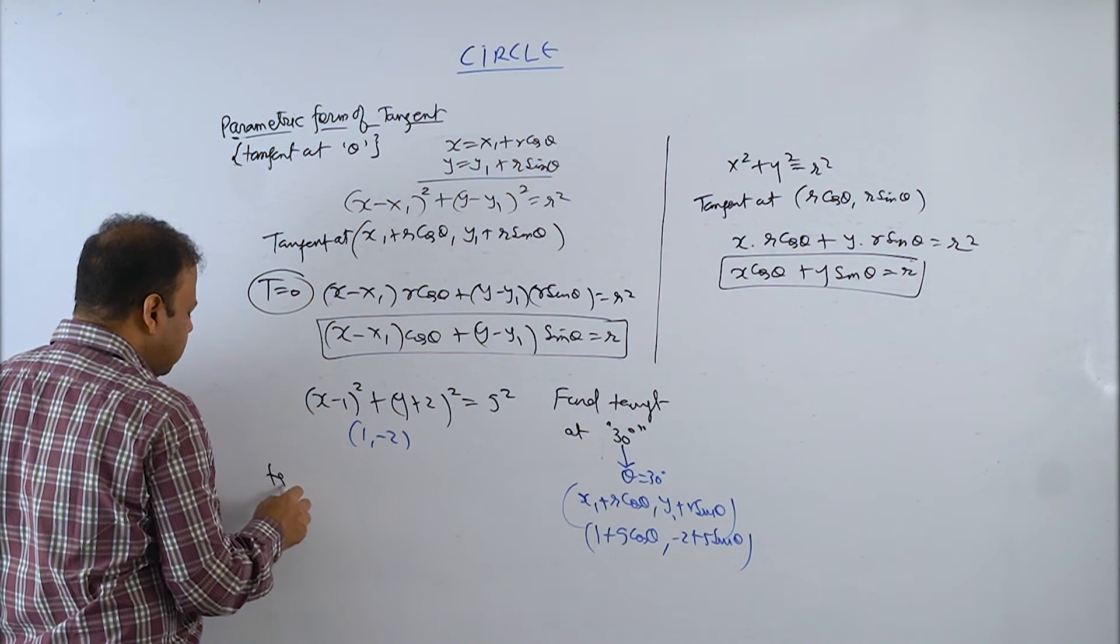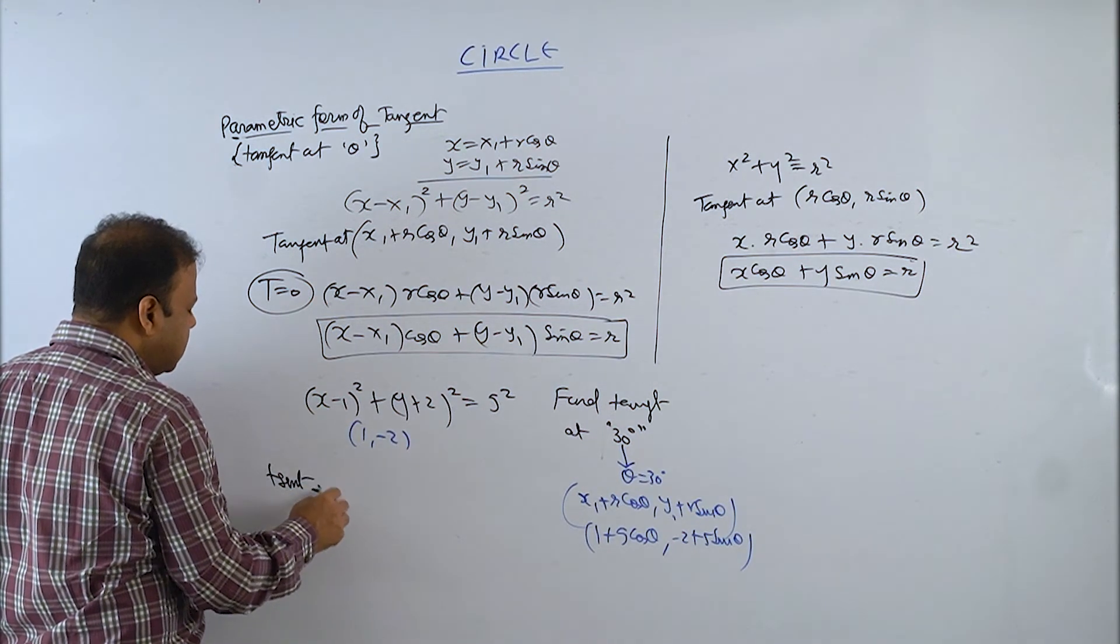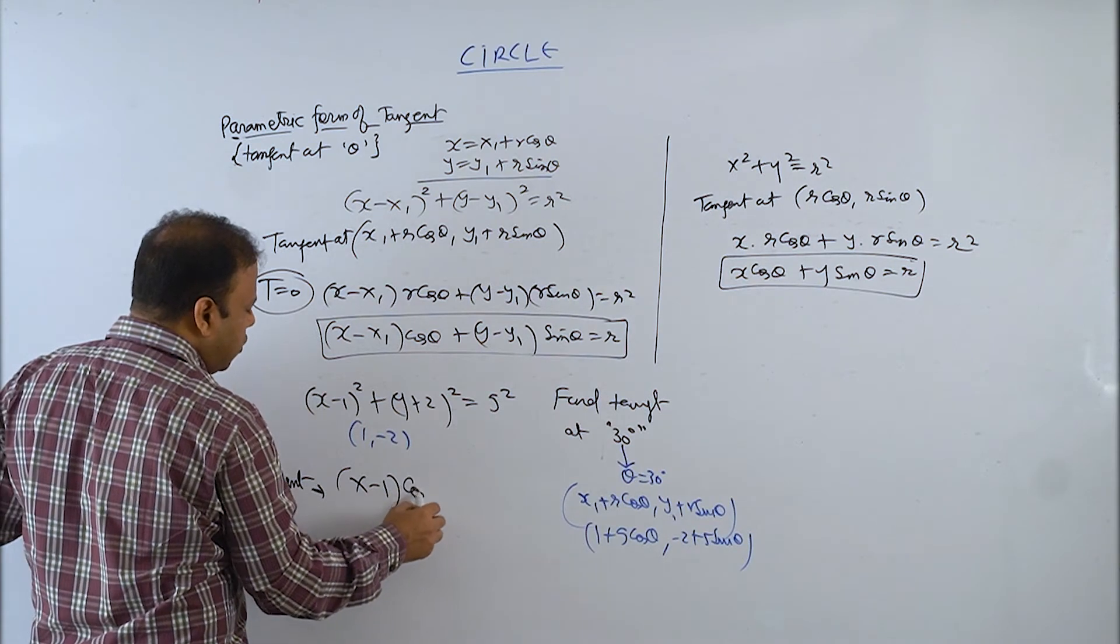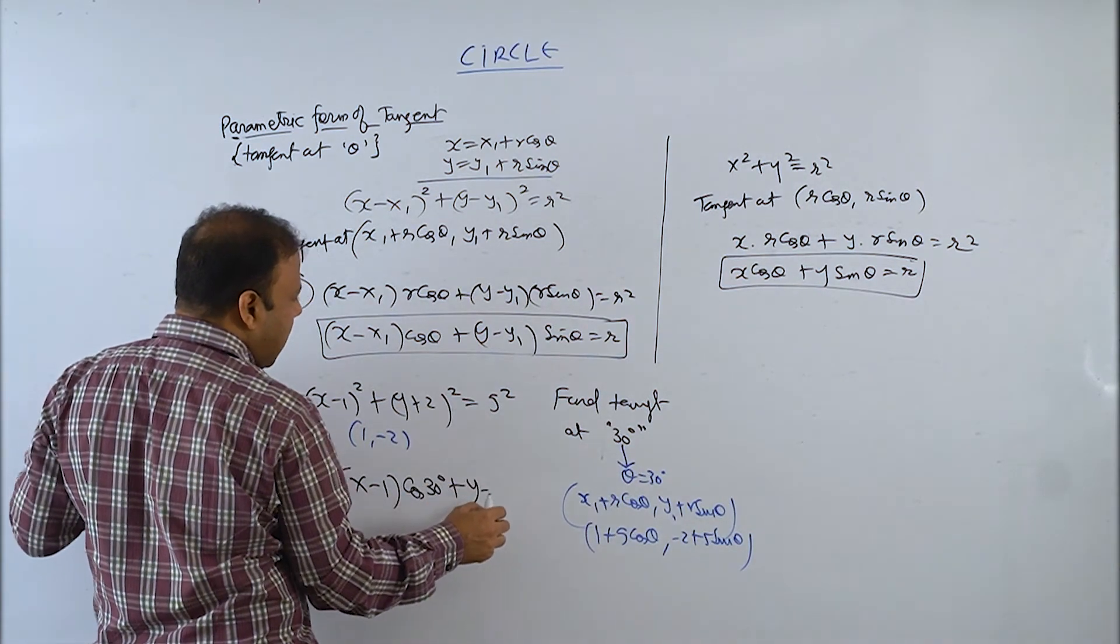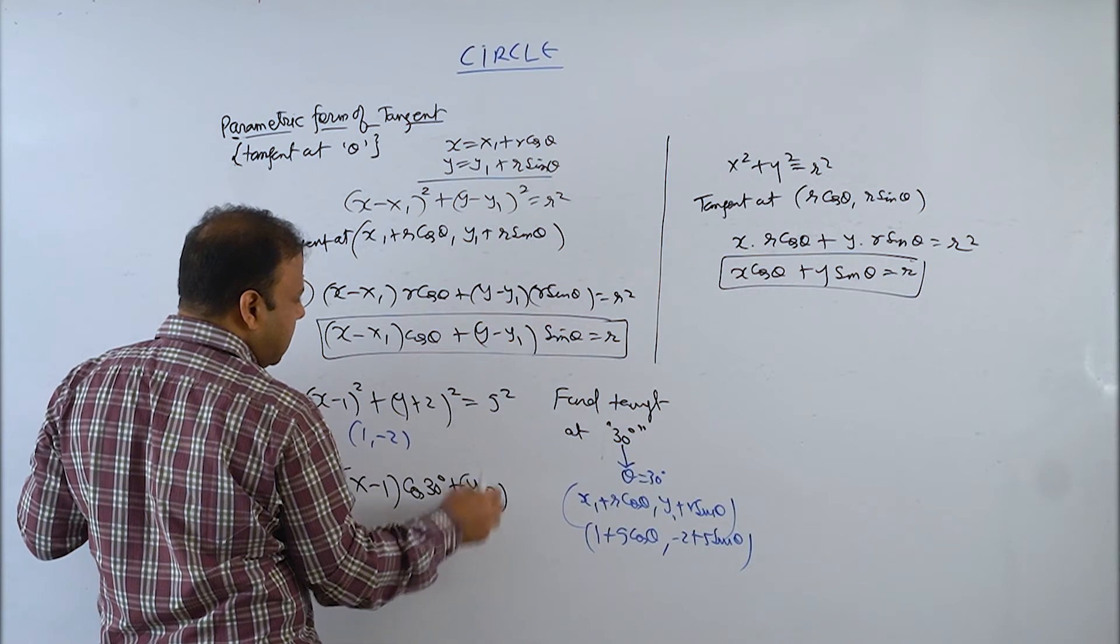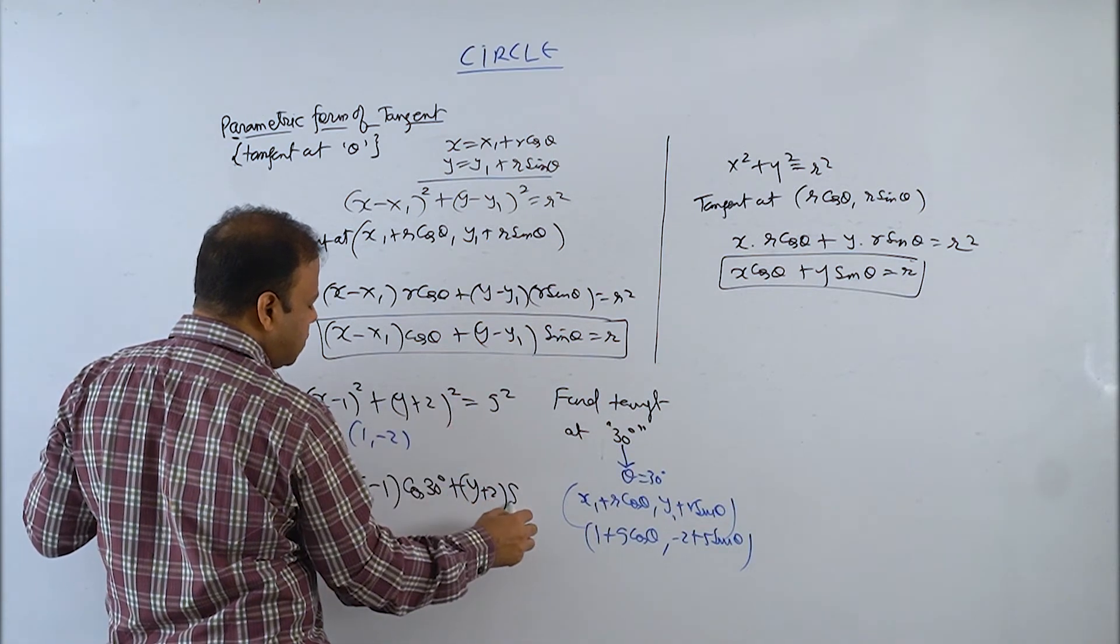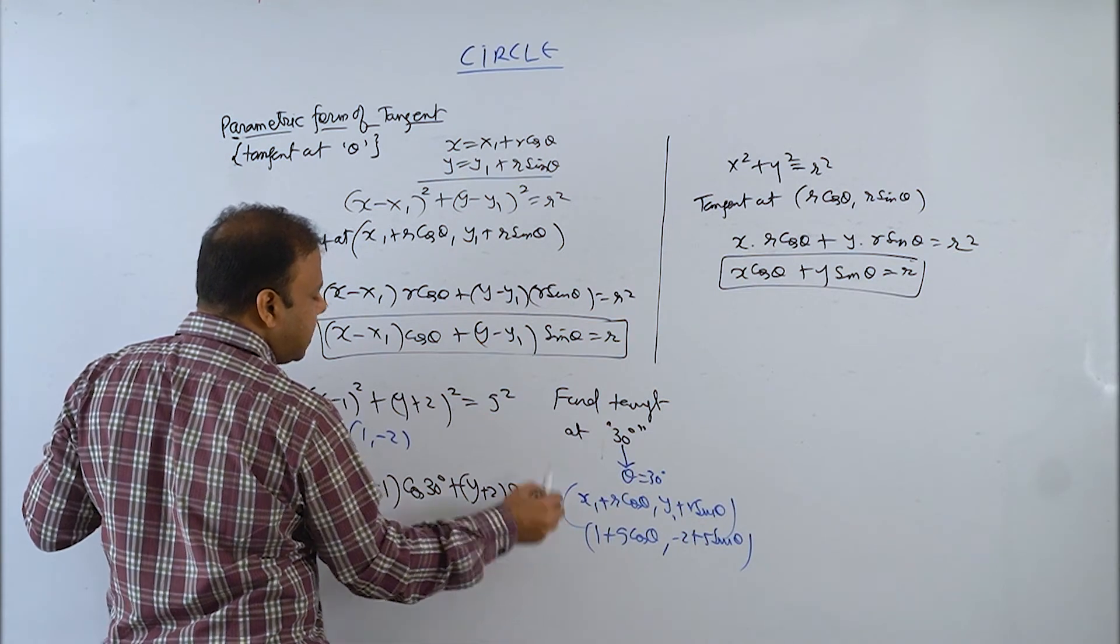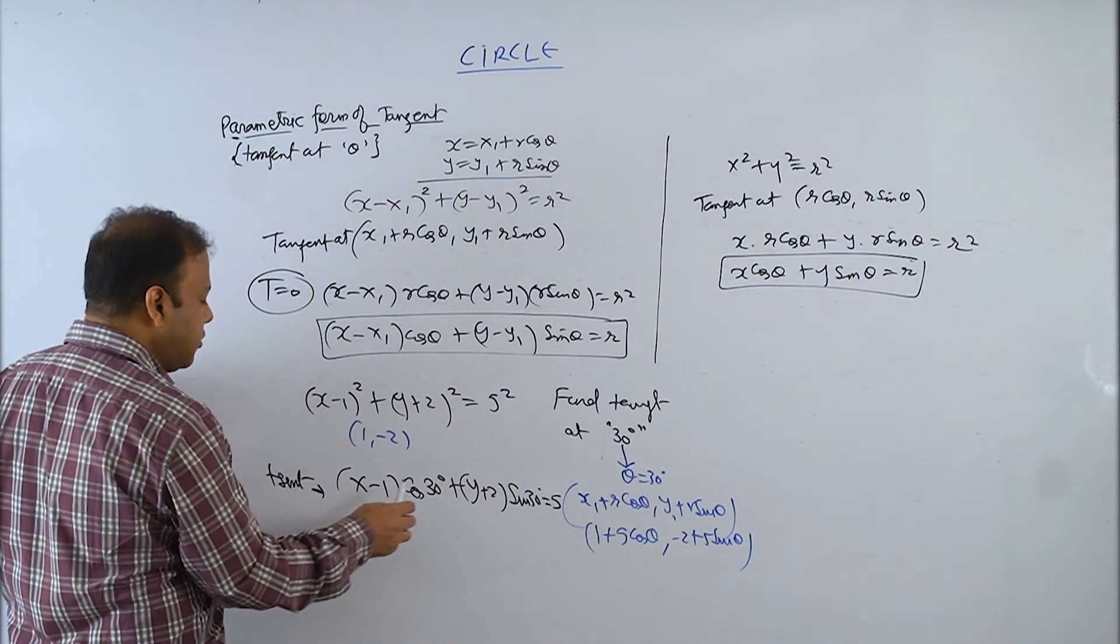You have tangent will be x minus x1 into cos theta, which is 30 degree, and y minus y1, which is y plus 2, into sin 30 degree equals r. And that will be 5. R square will not be there.